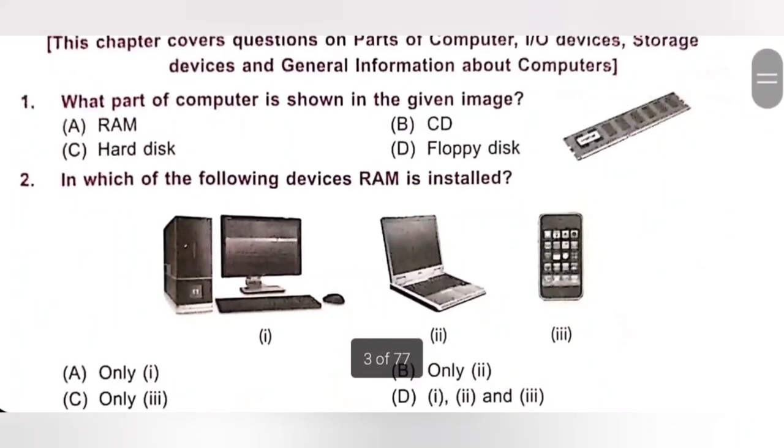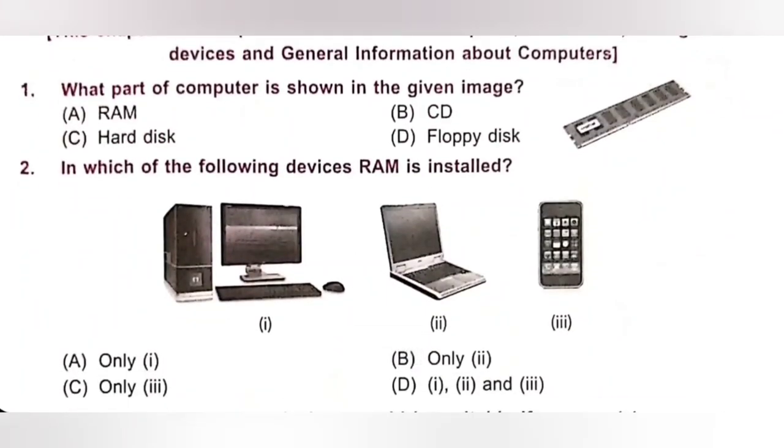First one. What part of computer is shown in the given image? A. RAM. B. CD. C. Hard disk. D. Floppy disk. So, the part of computer shown in the given image is RAM. Option A is the correct answer.